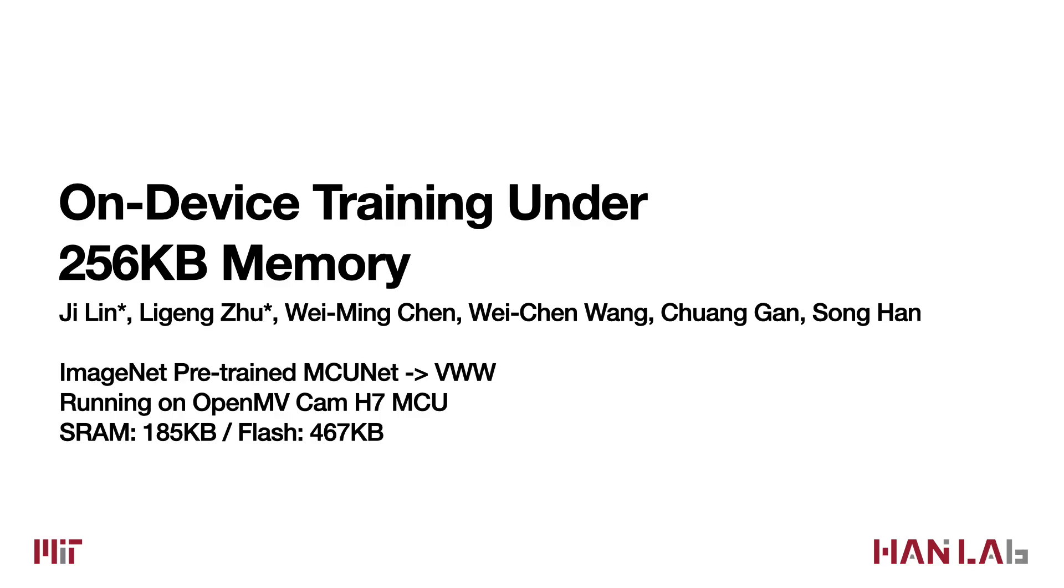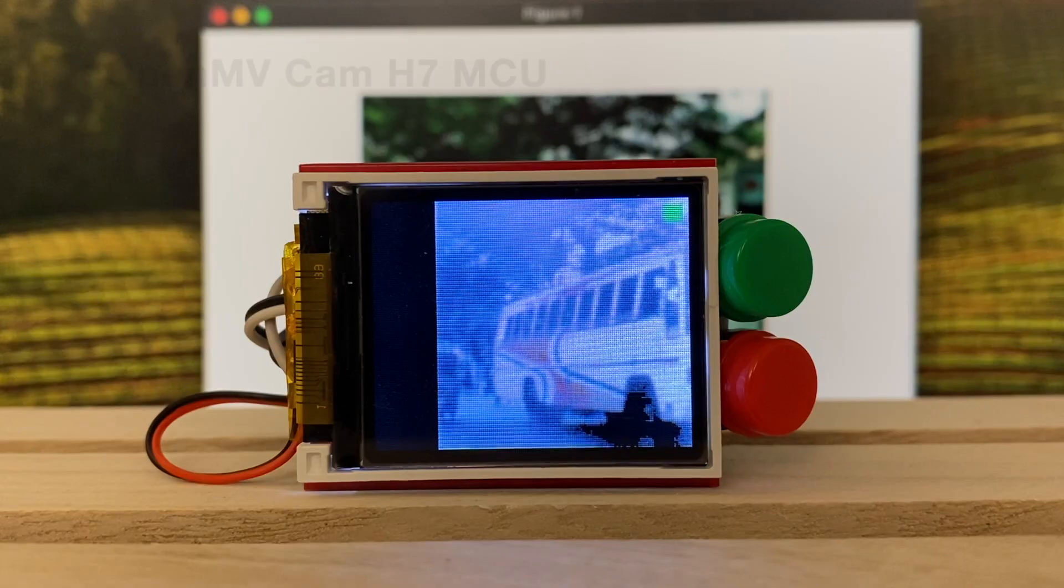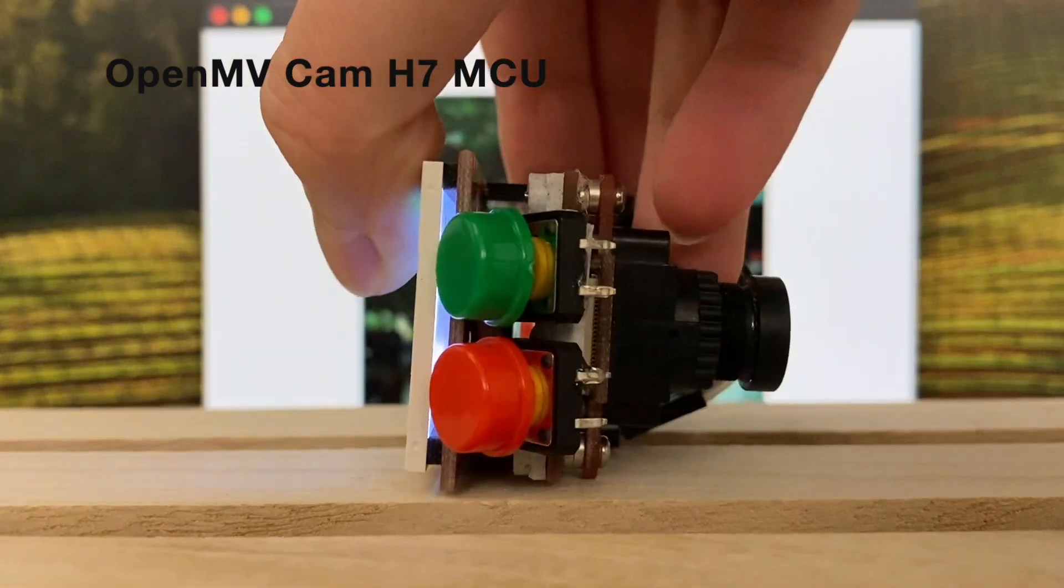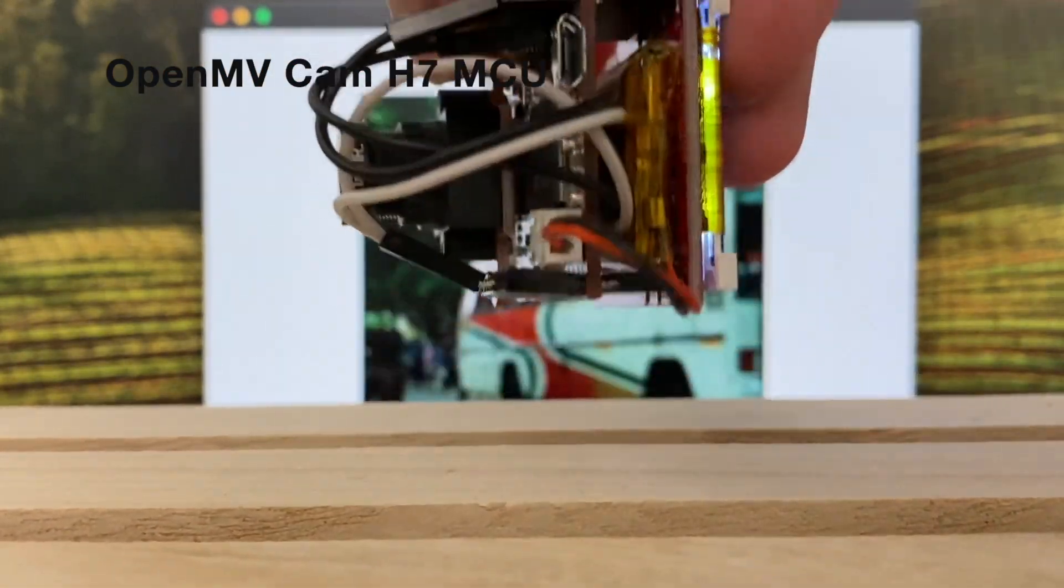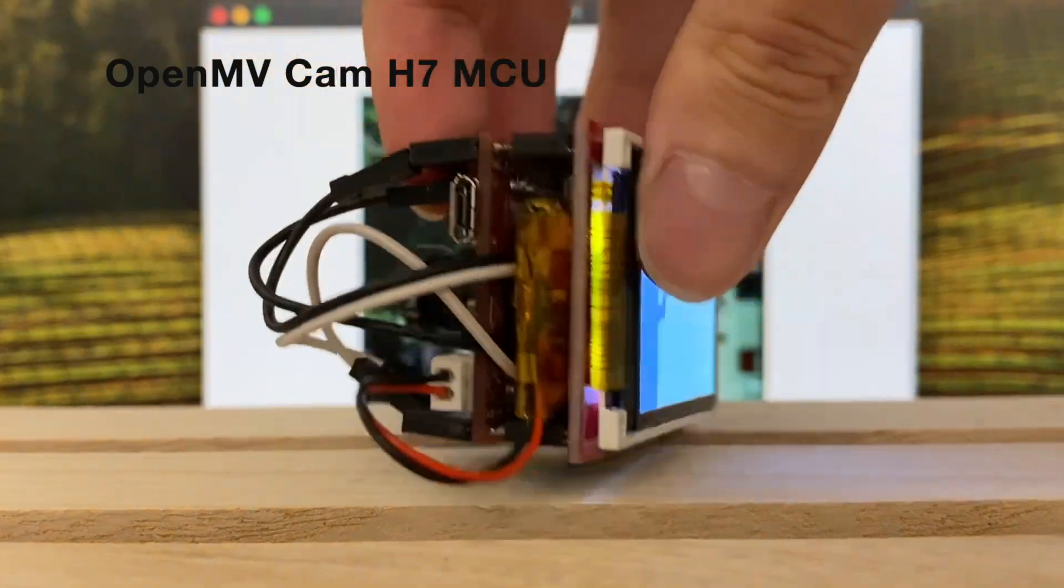In this video, we show that we can perform tiny on-device training on a small OpenMV Cam H7 microcontroller. We show different images on the computer display so that the OpenMV camera can pick up the image as the input.